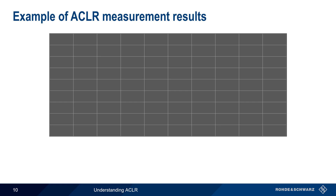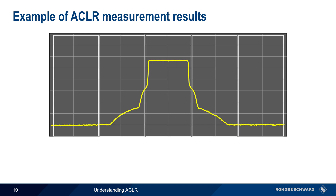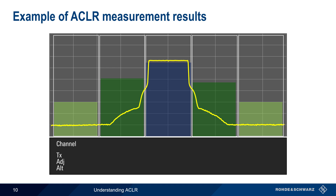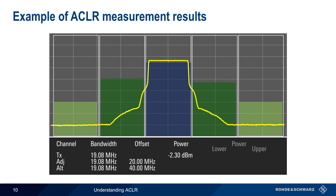Here is an example of how ACLR measurement results are typically displayed. A graphical view shows the measured power over the span, with the transmit, adjacent, and alternate channel boundaries displayed. Shaded bars show the measured power for each channel, and it's these powers that are displayed numerically. For each channel, the channel bandwidth is given along with the offset for adjacent and alternate channels. The power in the transmit channel is always given in absolute units of dBm, since this power will be used when computing the ratio of channel power to leaked power. However, for adjacent and alternate channels, ACLR is normally calculated and displayed in units of dBc, or dB down from the transmit carrier. Note too that if any channel limits are violated, these are usually indicated using a different color or sign for ease of identification.